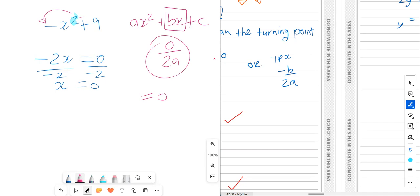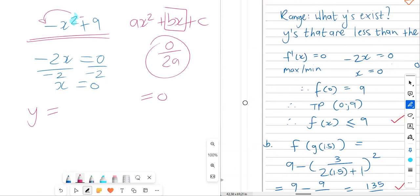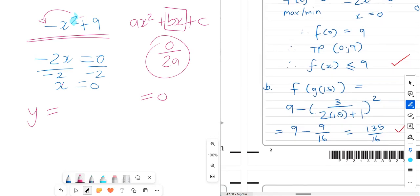If x is 0, then we can sub this back into the original f of x to find y. So when x is 0, then you end up with something that looks like this. So as you can see, 0 squared is just 0. So our y equals 9. We end up with a turning point or a max or a min that is 0, 9.